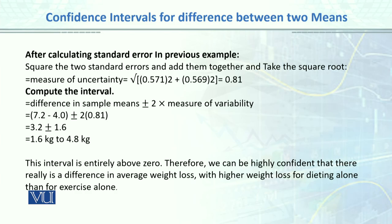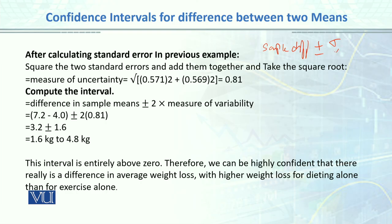We have done the example of weight loss using an exercise plan and a diet plan. We found that weight loss was significantly greater with exercise than with the diet plan. Using two groups, we calculate the difference and form a confidence interval for the difference of means, using the formula: sample difference plus or minus Z times the standard error of the difference of the two means.